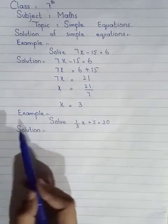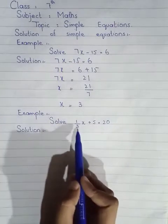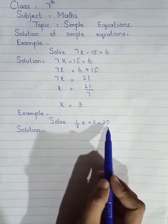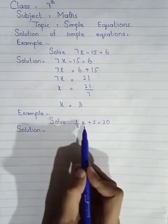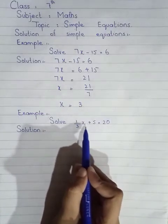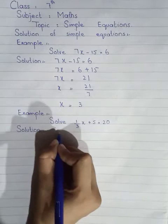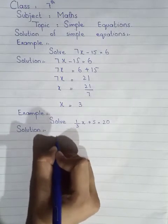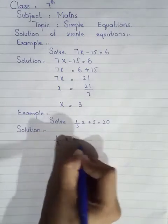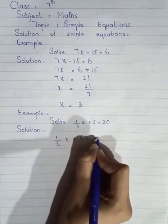Now, students, next example: solve — 1 by 3 x plus 5 is equal to 20. Students, here also we have to find out the value of the unknown quantity x.